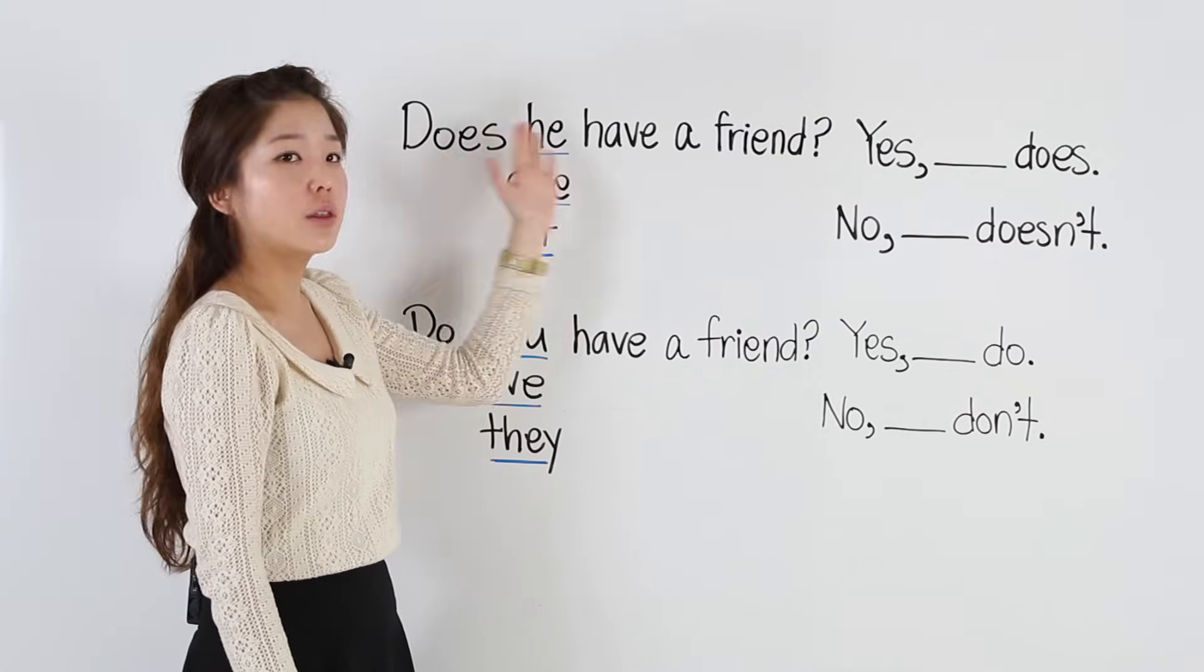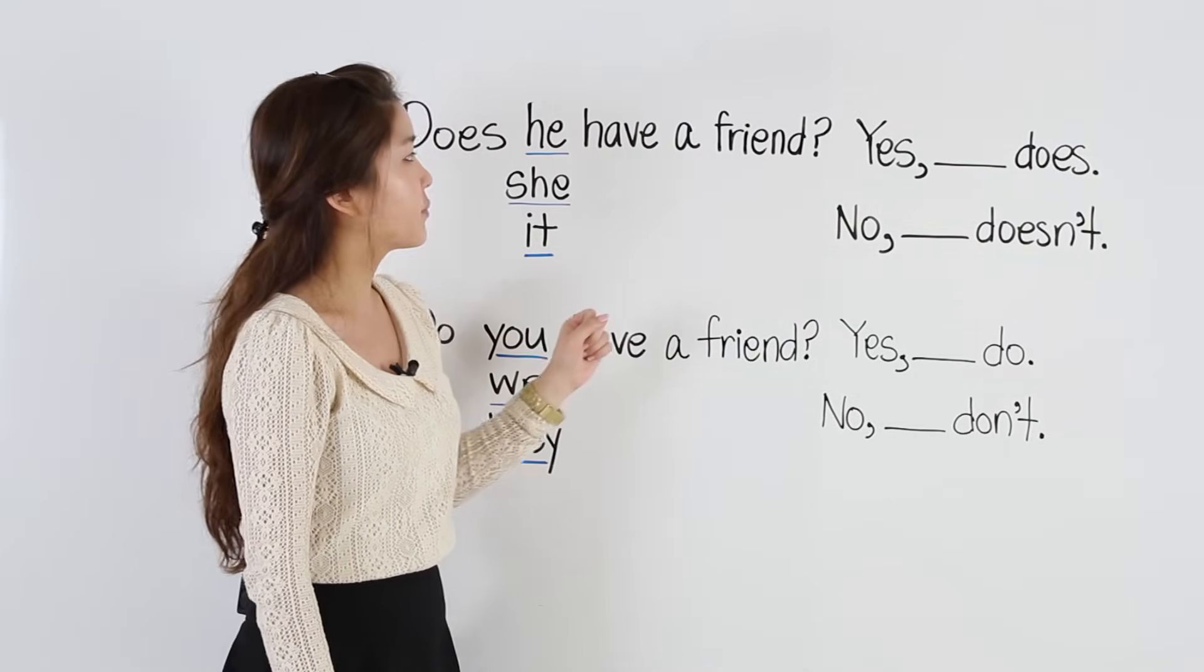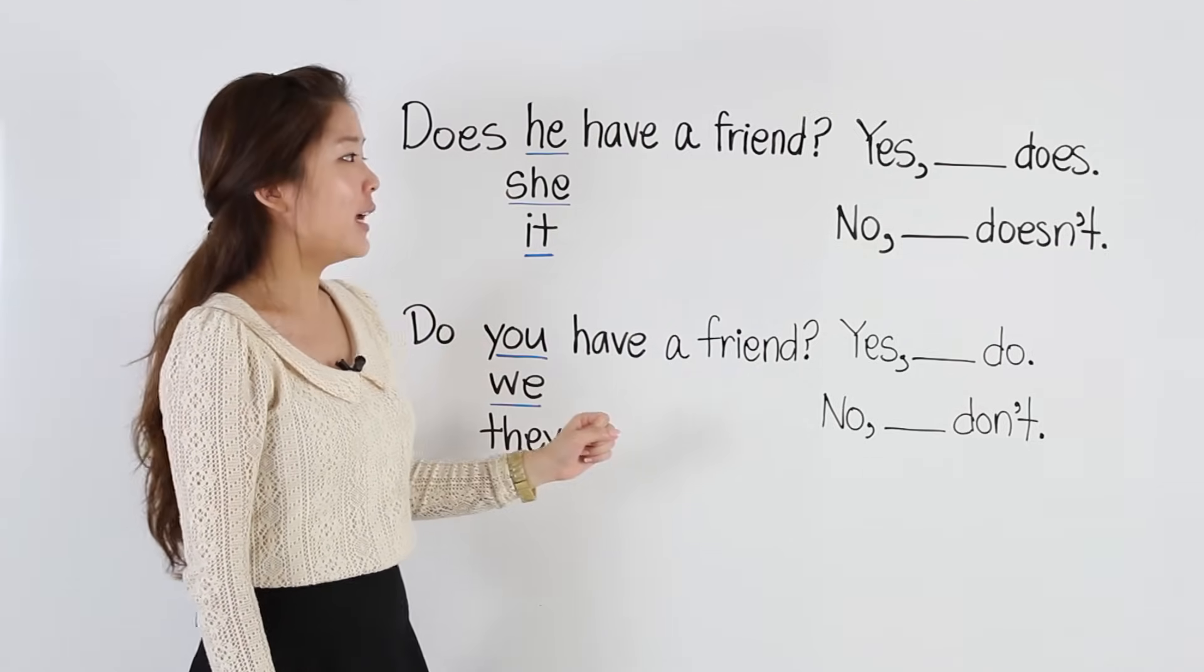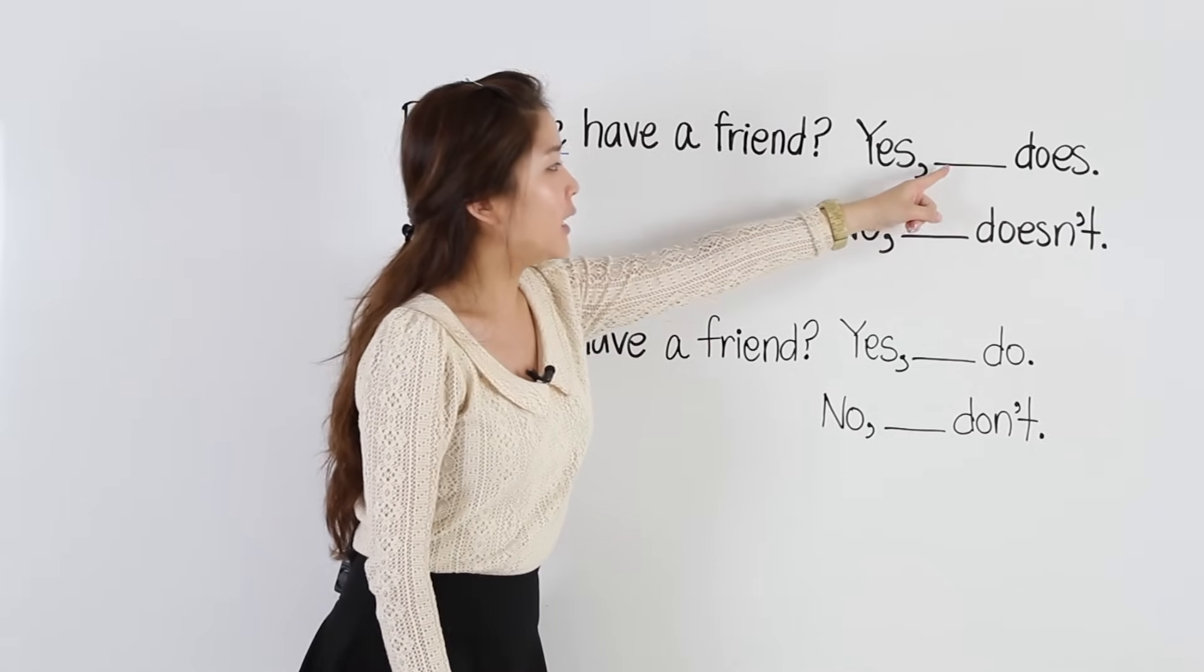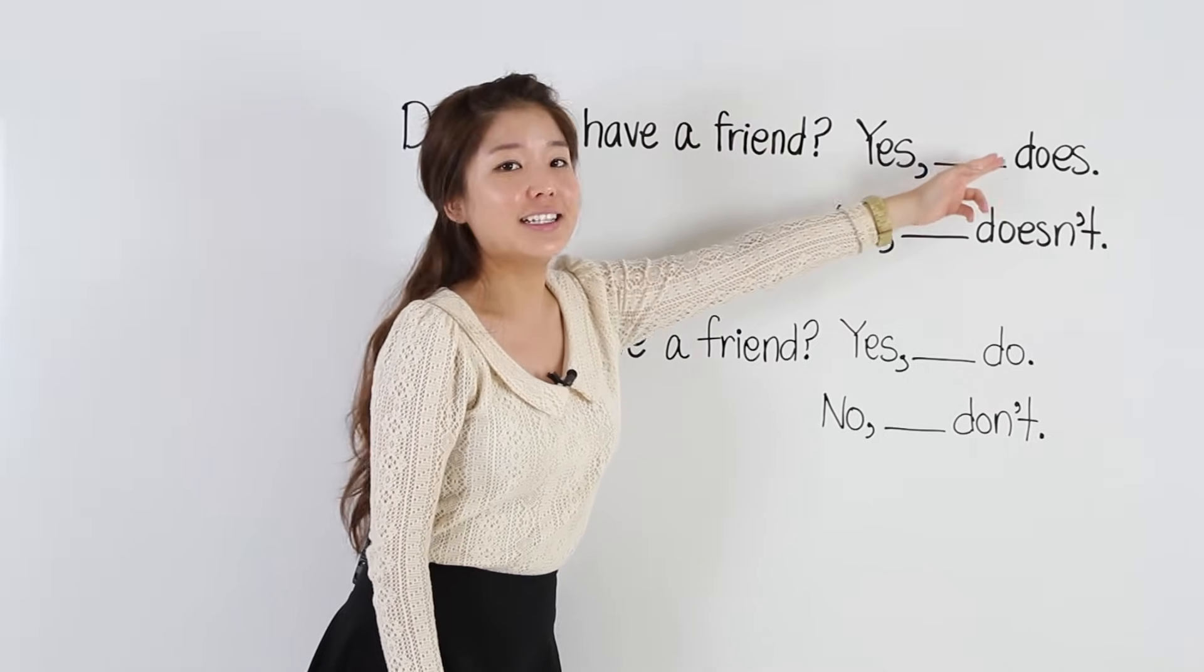Now, let's practice with this question and let's look at the two answers. Okay, does he have a friend? If the answer is yes, we say yes. In the blank, we match. This has to be the same. Yes, he does.